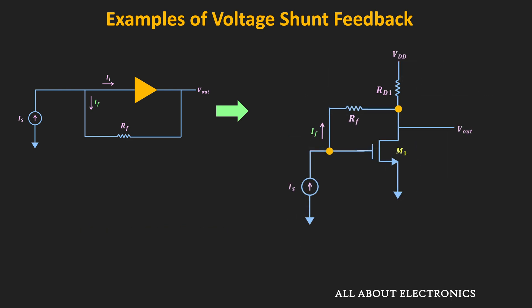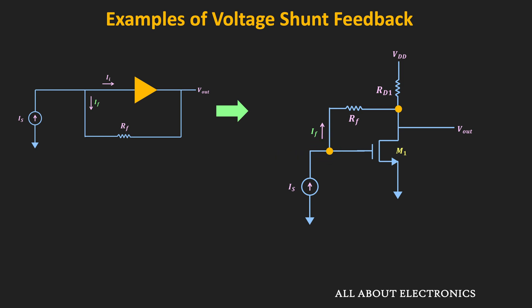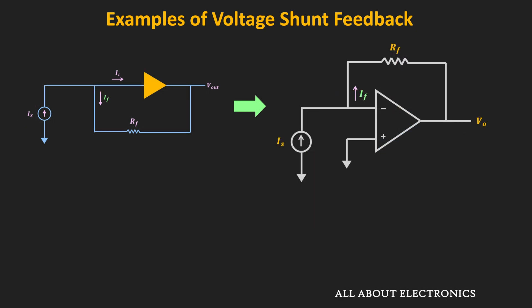Similarly, this is another example of the voltage-shunt feedback amplifier. One end of the feedback resistor is connected to the output node and the other end is connected to the source current at the input side. Since one end of the feedback component is directly connected to the output voltage, it samples the output voltage, and the feedback resistor is connected to the input current source via the shunt connection. This is also the trans-impedance amplifier using the op-amp, and once again it is an example of the voltage-shunt feedback.